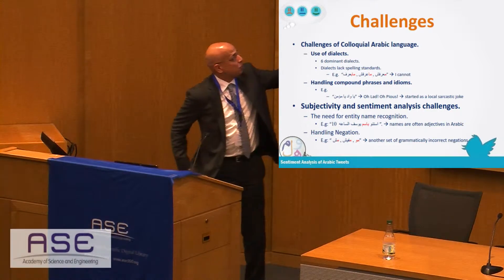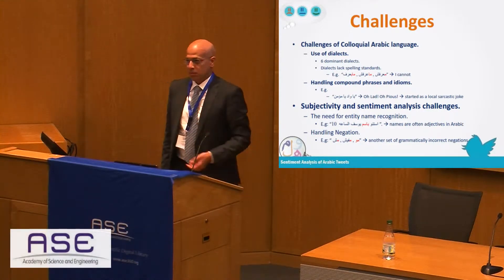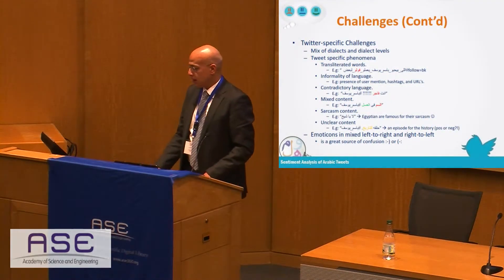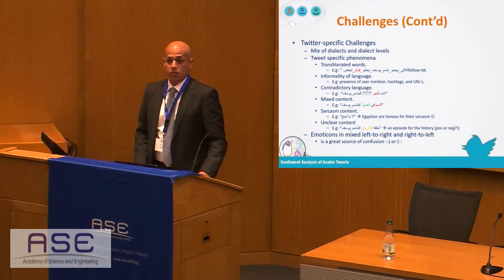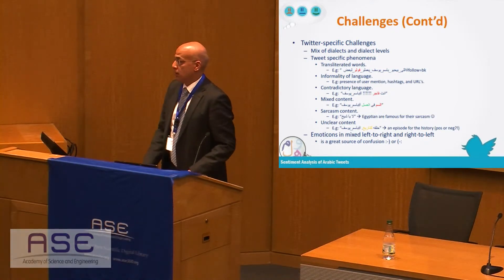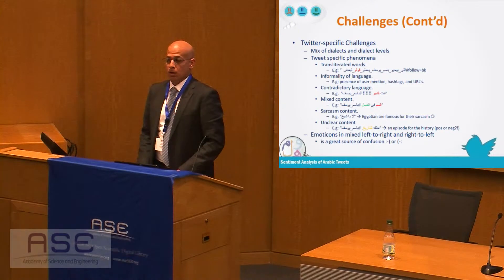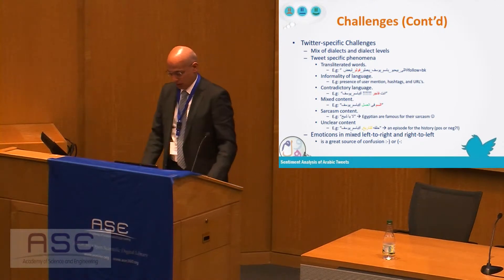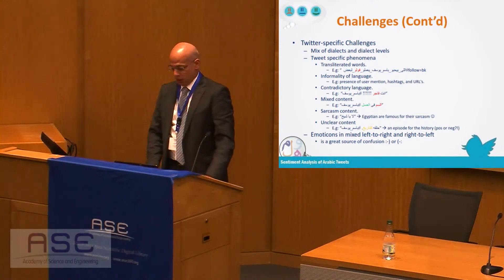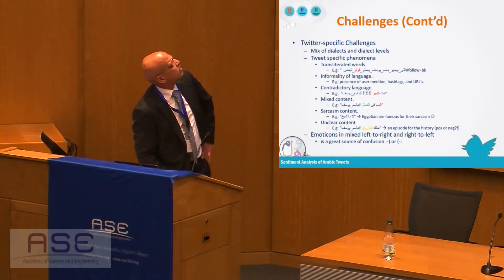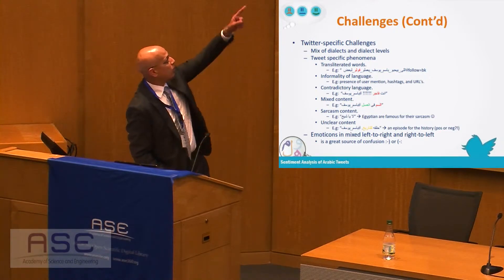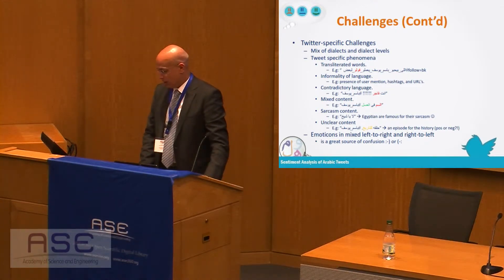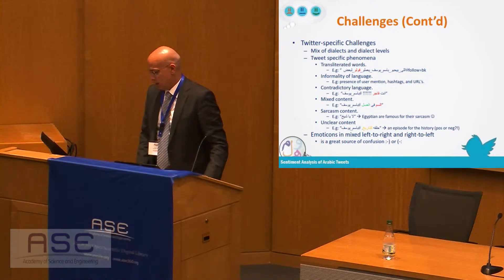Handling negation is also a challenge — there are three forms of negation and all of them are grammatically incorrect. We also have a mix of dialects and dialect levels: Egyptians and Arabs in general tend to mix in a single tweet their dialect with maybe a quote from the Quran, which is not even Modern Standard Arabic but old Arabic — adding another dimensionality. There are also lots of transliterated words; for example, a hashtag meaning 'who loves Bassem Youssef must do a follow,' where 'follow' written as F-O-L-O is transliterated.